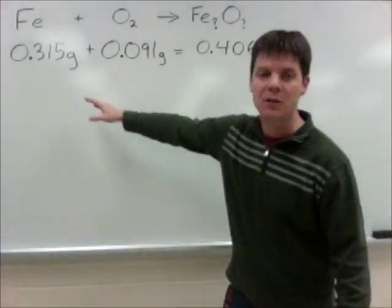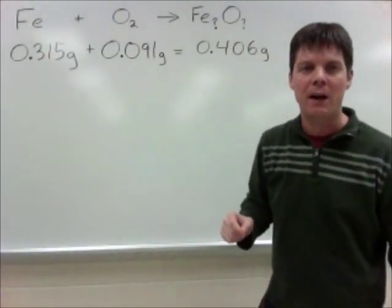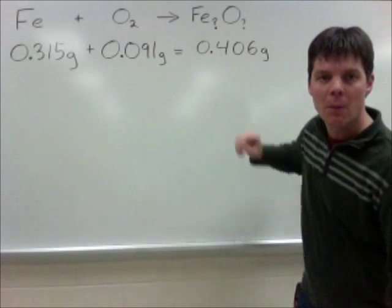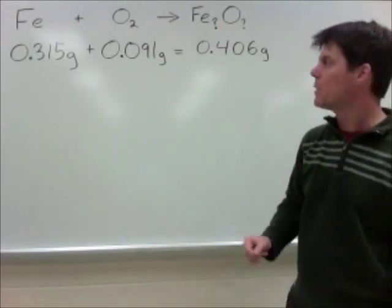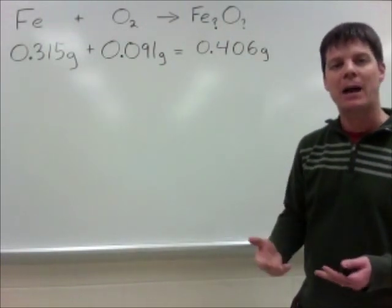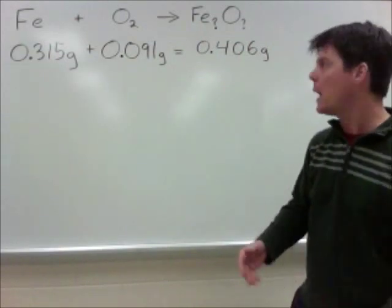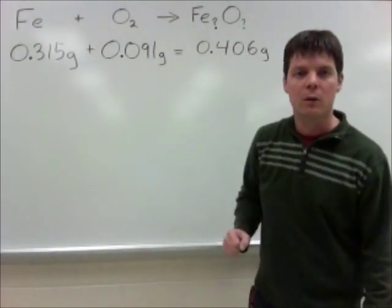We knew the mass of iron going in, that was 0.315 grams. We knew the mass of the compound formed, 0.406 grams. This allowed us to calculate the mass of oxygen which reacted with the iron. That was 0.091 grams.